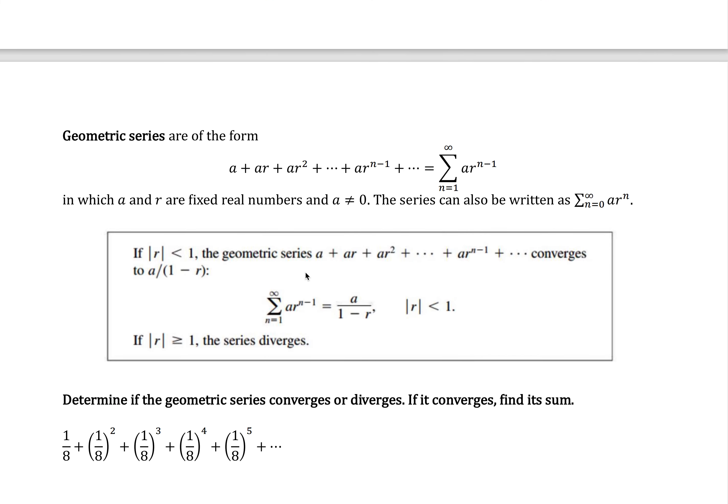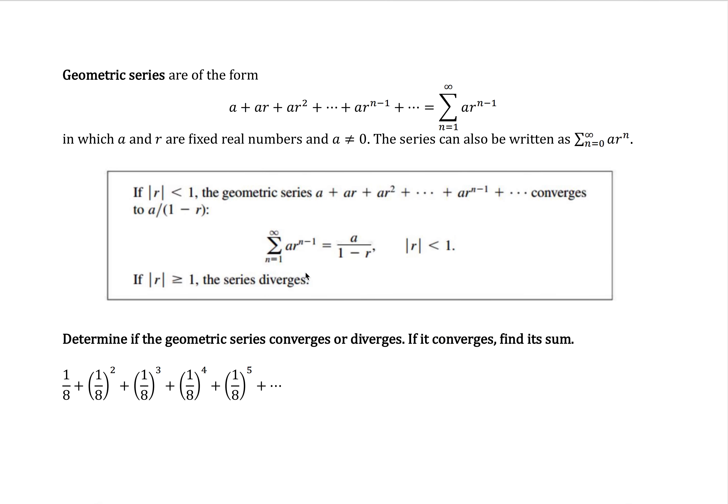Now a very specific type of series is a geometric series. Geometric series are in this form here. Here we have a plus a times r to the first plus a times r to the second, and so on and so on.